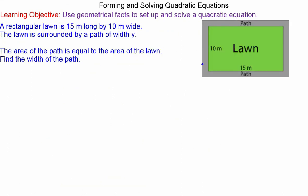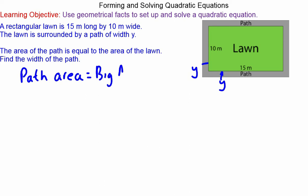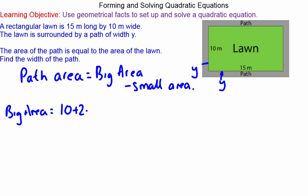Moving on to a different problem: we're going to work out the length of a path, given as y. There is a y-metre path along the border of a lawn. The area of the path equals the big rectangle area — which includes the path and the lawn — minus the small rectangle area, which is just the lawn. The big area has height 10 + 2y and length 15 + 2y.